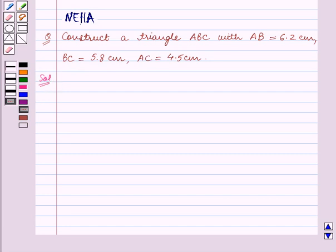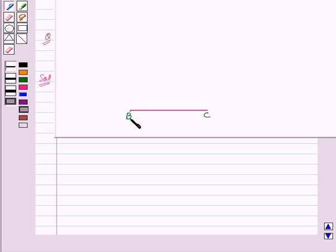We shall write down the steps of construction. Step 1 of construction is, draw a line segment BC which is equal to 5.8 cm. So we have drawn a line segment BC of length 5.8 cm.